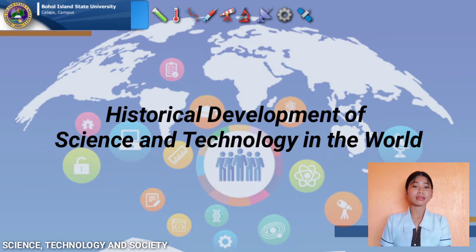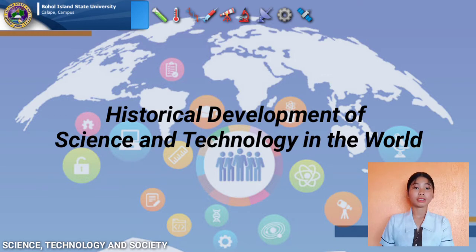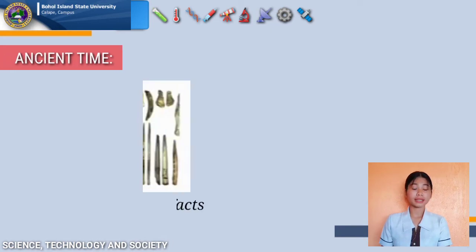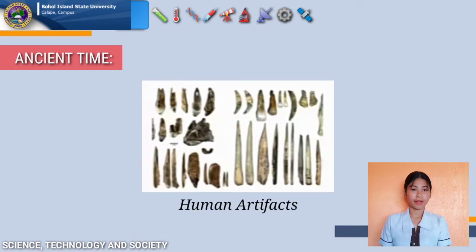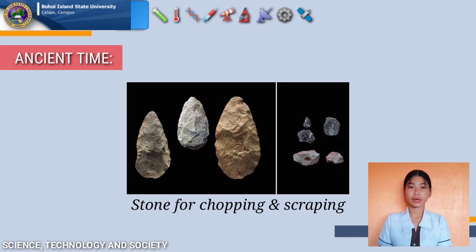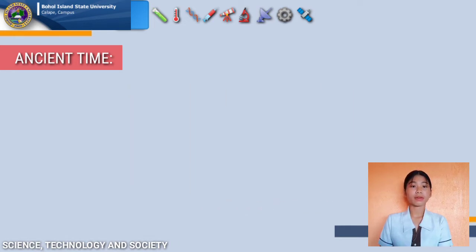Science and technology is associated with all means of modernity and is considered essential for rapid development. The state of science and technology determines the socio-economic progress of a country. In ancient times, the earliest forms of science and technology were human artifacts found during prehistoric times, about 2.3 million years ago — roughly shaped stones used for chopping and scraping, found primarily in Eastern Africa.